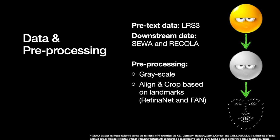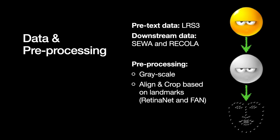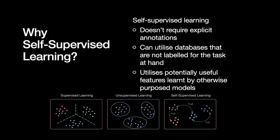When we pre-process this data across all datasets, first we grayscale it and then we align and crop the videos based on landmarks, specifically using Retinet and Fan for alignment and cropping. Just to be clear, we don't actually save or use landmarks in any way other than to produce the final cropped video. The reason we use self-supervised learning here is that datasets labeled for apparent emotional reactions are relatively small. Self-supervised learning does not require explicit annotations, which means we can use any dataset not necessarily directly relevant. More than that, we can use features learned by otherwise-purposed models.